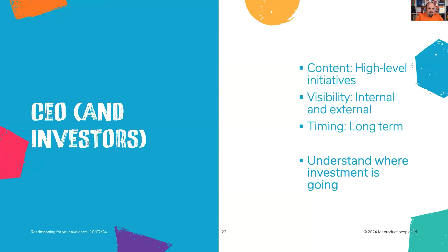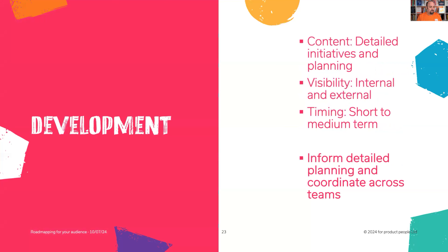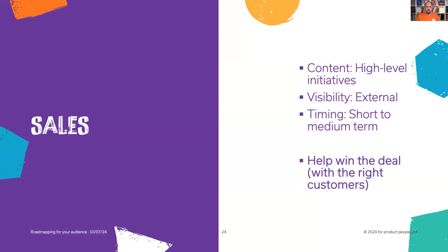Knowing that difference in expectation, they ended up with two artifacts. Development might care about something different: detailed initiatives and planning information, both internal and external, and a shorter time horizon — to inform detailed planning and coordinate across teams. Sales need high-level initiatives — too much detail puts you at risk in a contract. It's external only, relatively short to medium term, and it's about helping them win the right deals with the right customers: the ones that align with your direction of travel, not those going in a different direction.